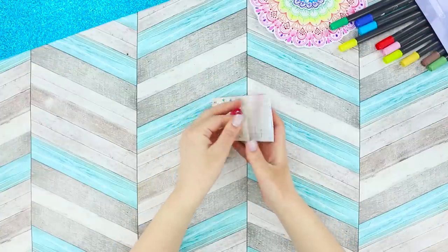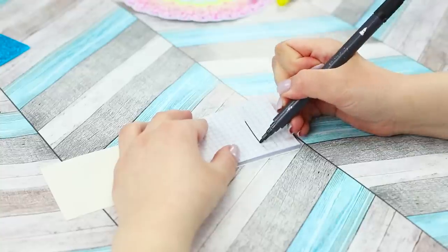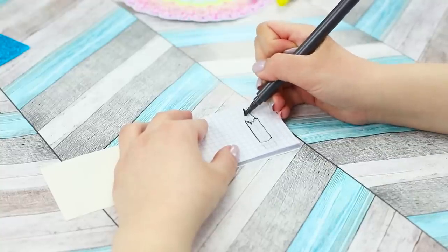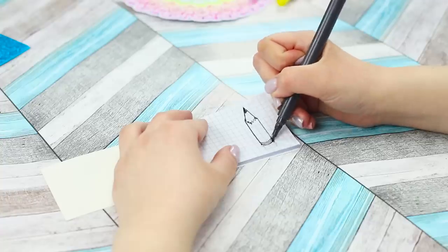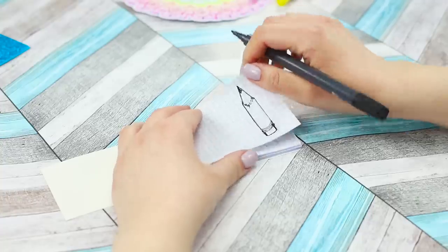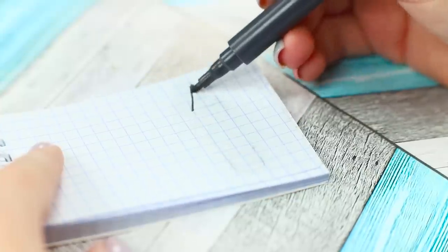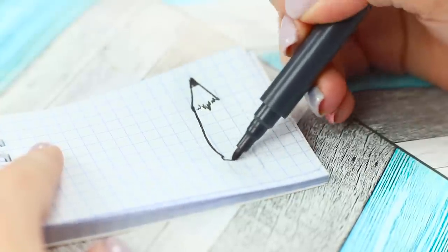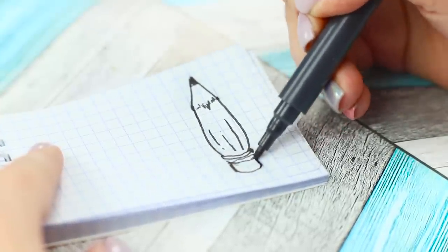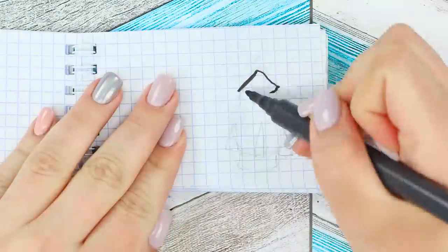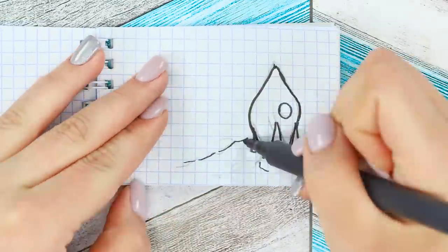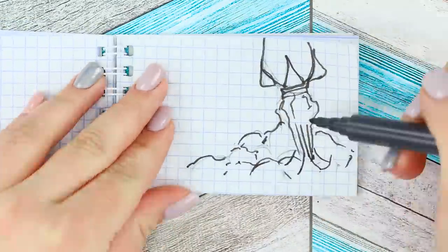And now take a small notebook and markers. Draw a rocket on the first page. It's better to make a sketch with a pencil first. Turn the page and draw the same rocket, but with some changes that happen during blast-off. On each page after that, make similar drawings, sending the rocket higher and higher into space.